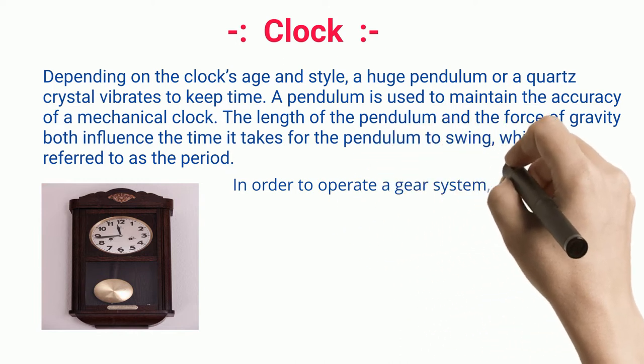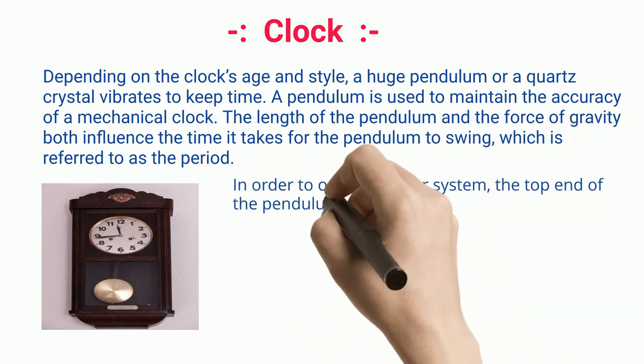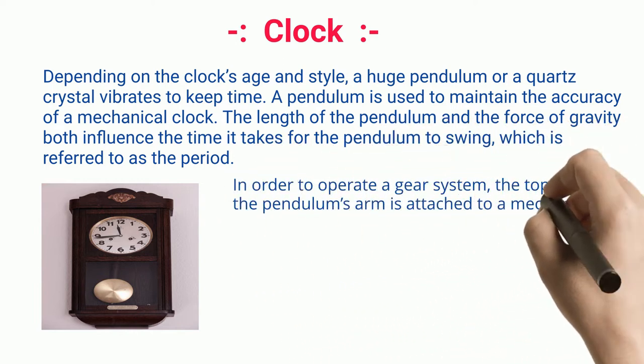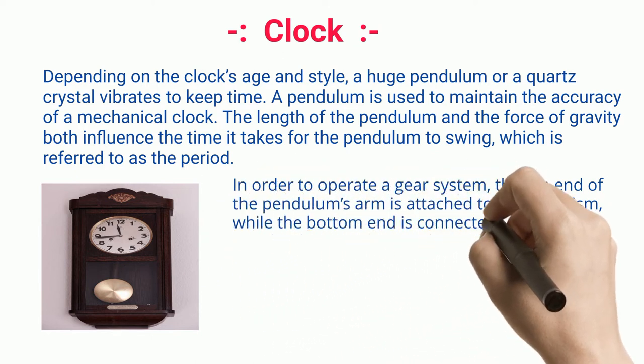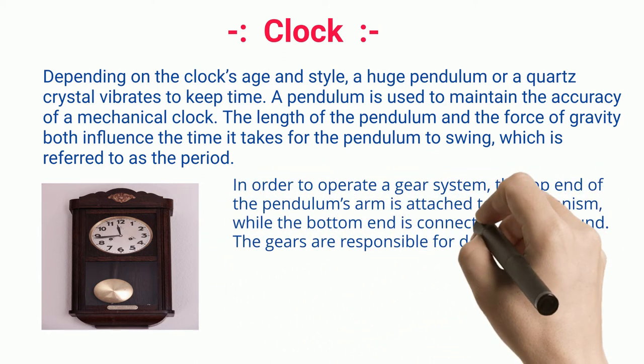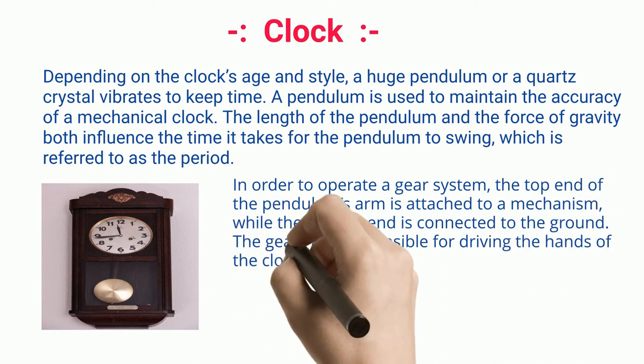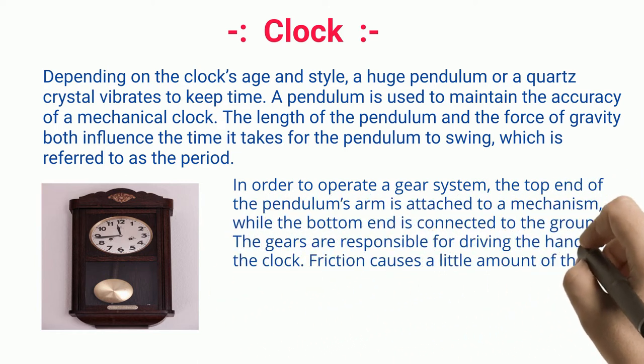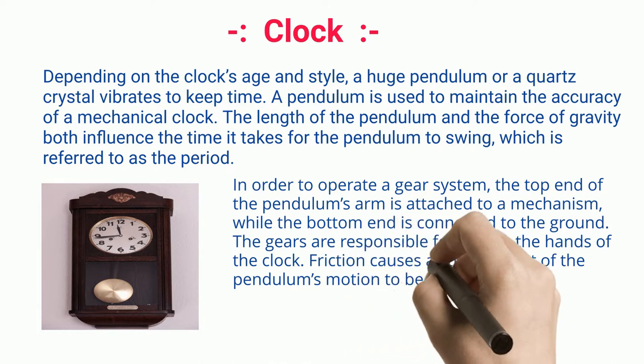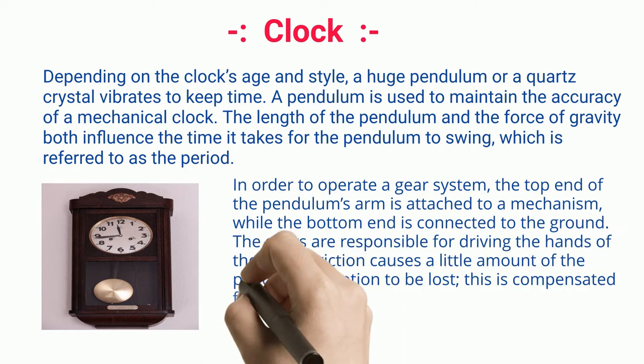In order to operate a gear system, the top end of the pendulum's arm is attached to a mechanism while the bottom end is connected to the ground. The gears are responsible for driving the hands of the clock. Friction causes a little amount of the pendulum's motion to be lost. This is compensated for by a wind-up spring or weights.